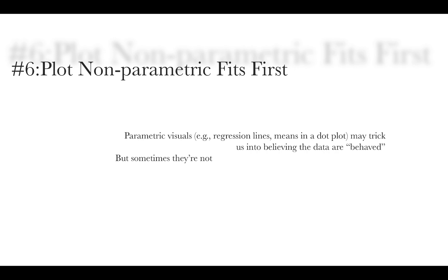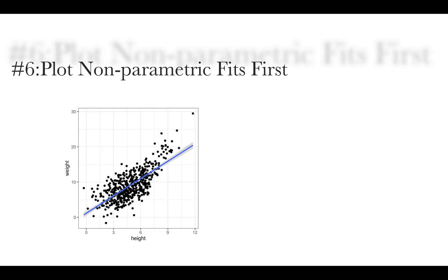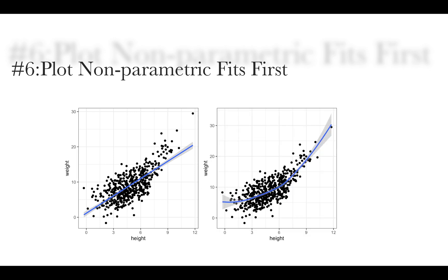Number six, we plot non-parametric fits first. So parametric visuals, for example, a regression line is a parametric fit, or a mean in a dot plot is a parametric fit. These may trick us into believing that the data are behaved when they're actually not. So just as an example, if I were to show you this graphic, you might just say, oh, cool, there's a positive linear relationship between the two, not realizing that lurking beneath, there's actually a non-linear relationship going on here that the lowest line here captured. And if you hadn't started with this line and just started with this line, you may not have caught it.